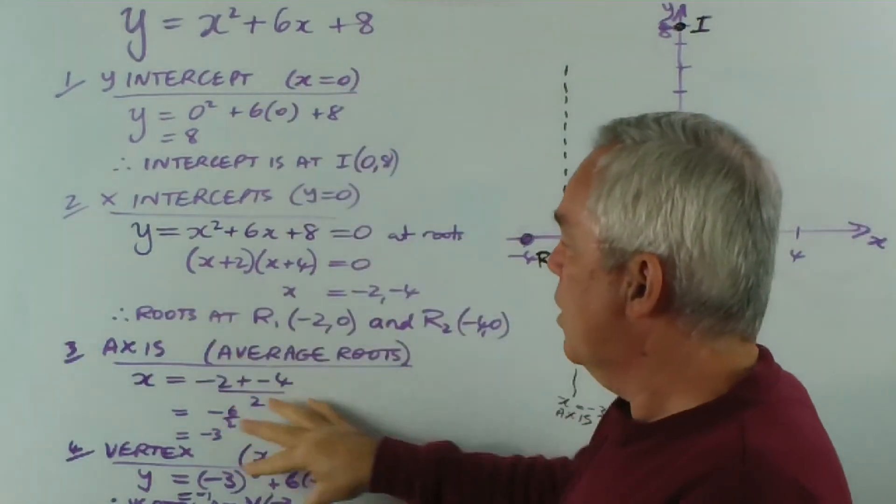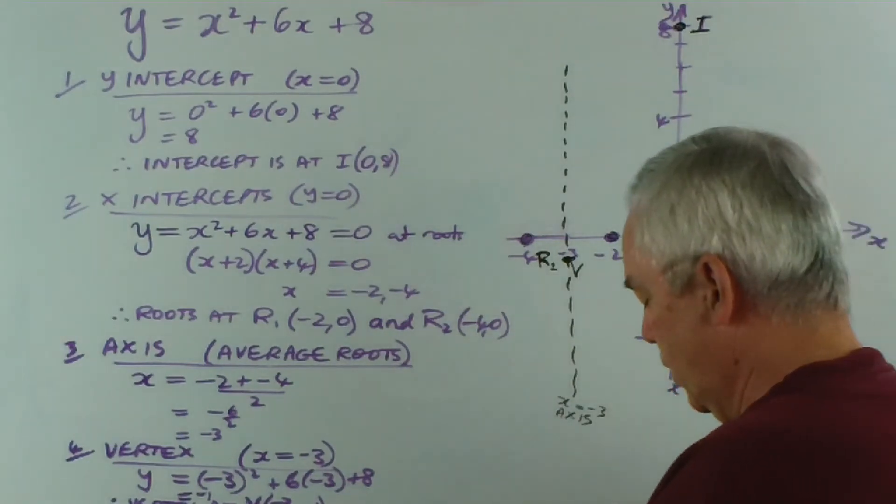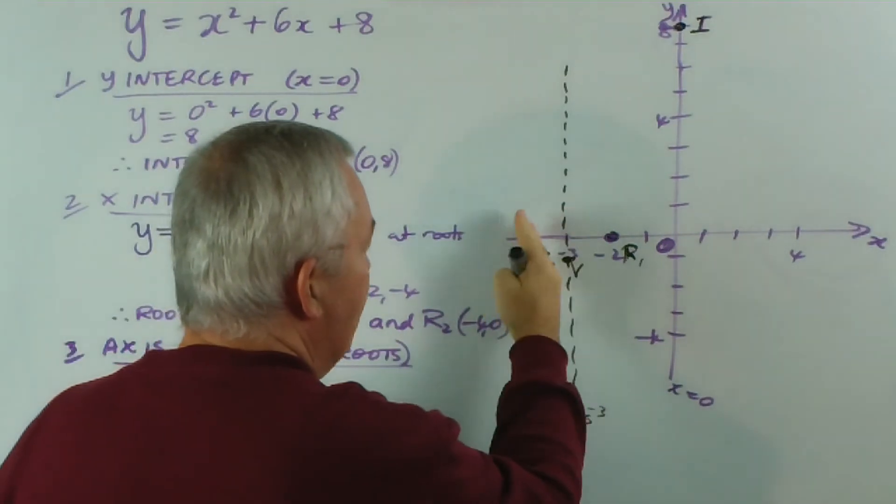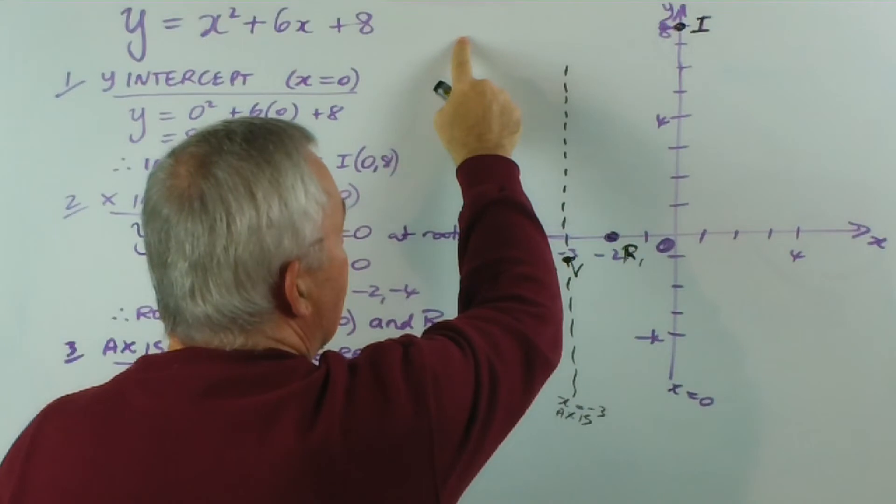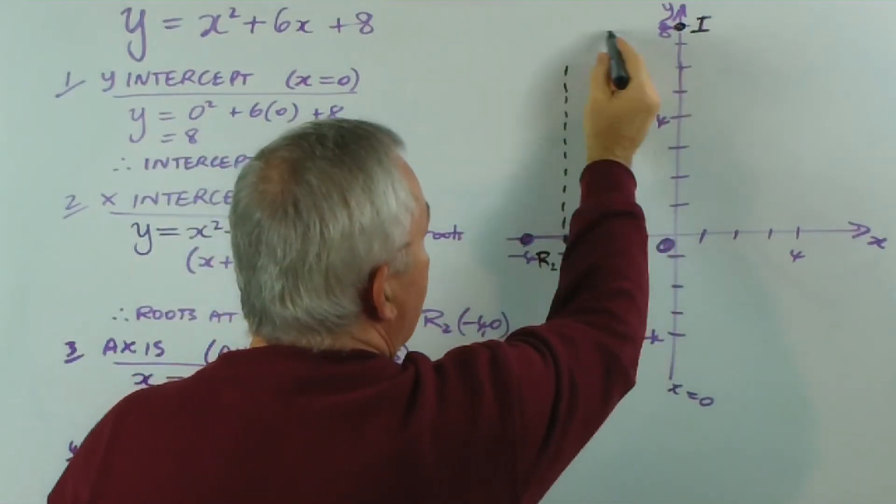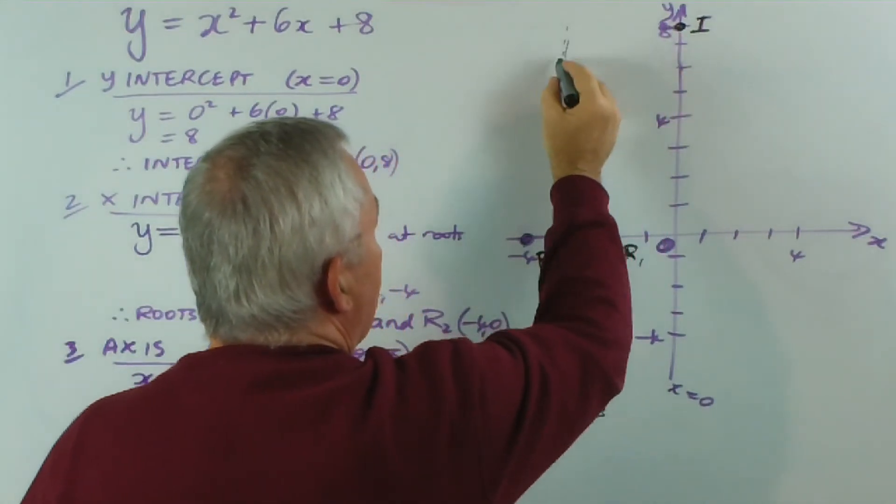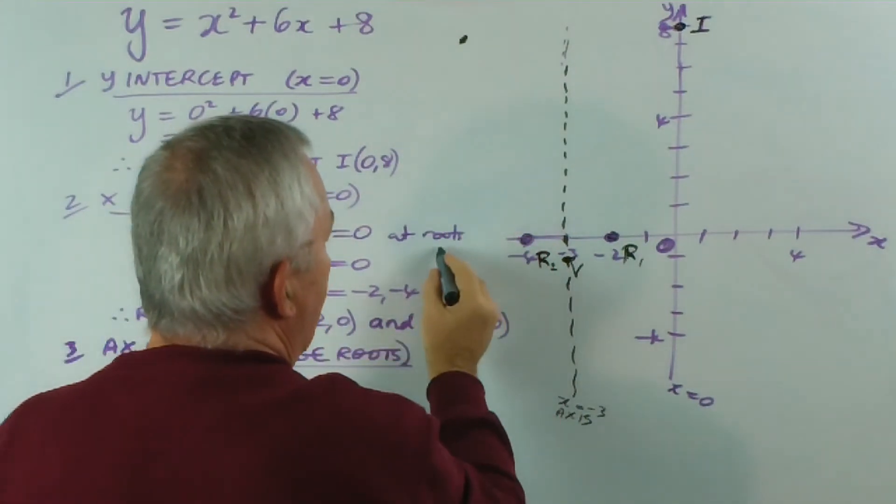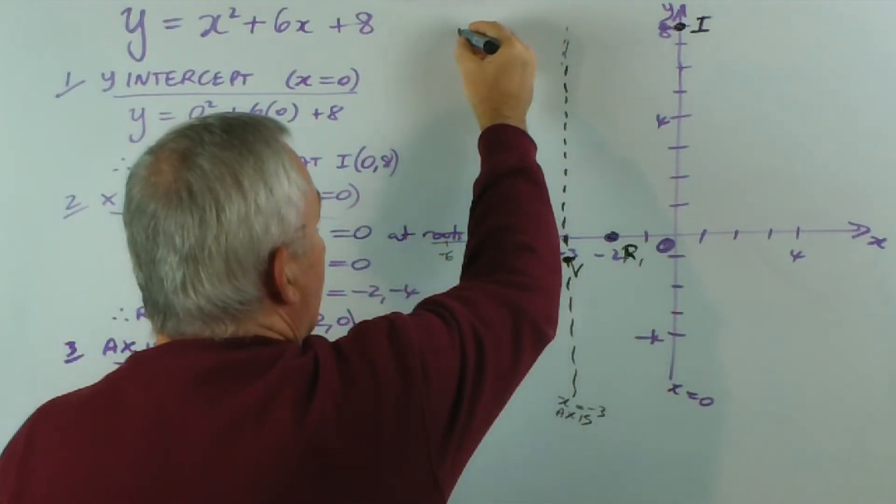So, there will be some explanatory videos coming, but this is the basic structure. And, of course, to complete the graph, because the parabola has symmetry, this point here will be matched by one the same distance the other side. So, if this is at minus three, we've got three units across to the point I, the intercept. So, we'd go three units the other way and have another point over here above negative six. And our parabola would look like this.